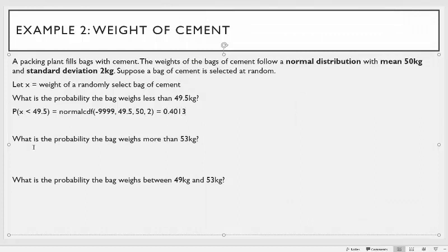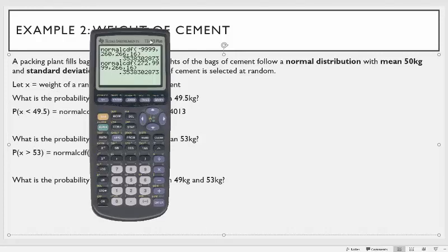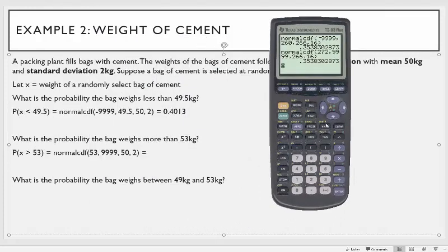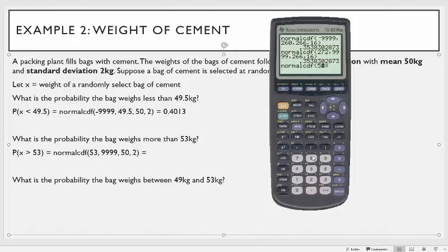What is the probability that a bag weighs more than 53 kilograms? Because it's a greater-than problem, you start at 53 and go to 99999. The mean is 50 and the standard deviation is 2. On the TI-83: second function DISTR, normal CDF, 53, 99999, 50, 2. You get 0.0668.